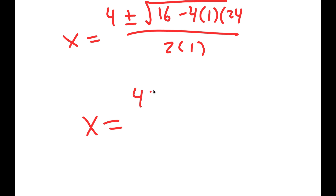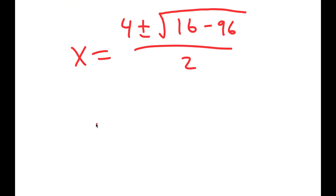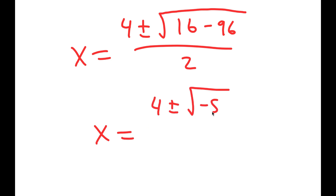This is equal to 4 plus or minus the square root of 16 minus 96, all over 2, which is equal to 4 plus or minus the square root of negative 80 over 2.